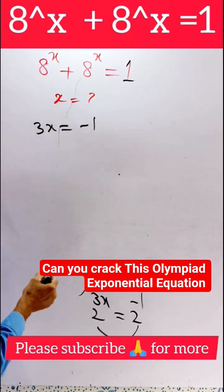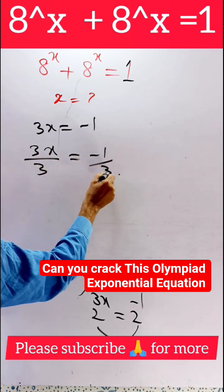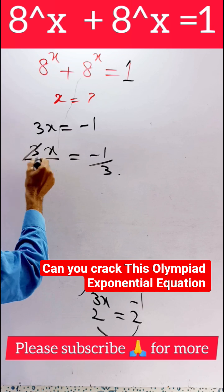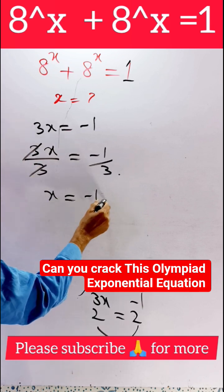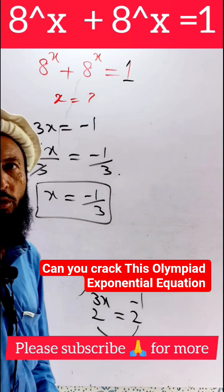Dividing both sides by 3, we get x = -1/3. So x equals minus 1 over 3 as the solution of this question. Thank you very much for watching.